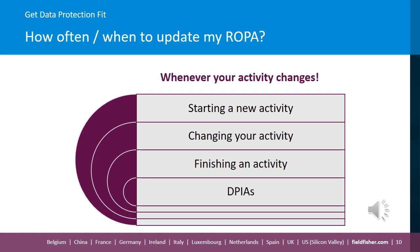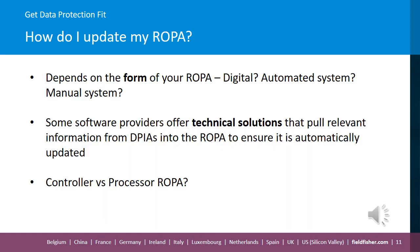Consistency is key. Find a cadence or frequency that works for you and your organisation and ensure processes are in place to deliver it, as well as those accountable and responsible teams to carry the updates out. Finally, how do you actually update your ROPA and what format should it be in? Again, there's no right or wrong answer here as long as your organisation has a formal, documented and accurate ROPA, which is regularly reviewed and is based on the collection of information in the manner we have described in this session.